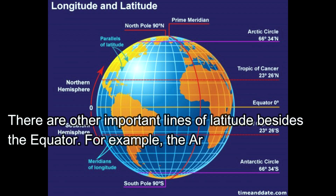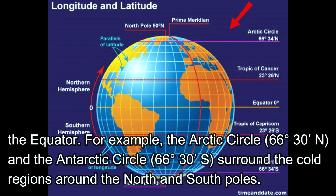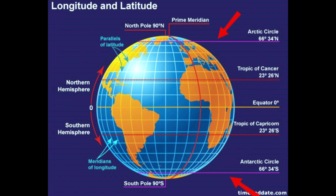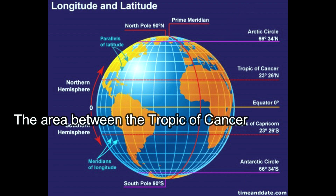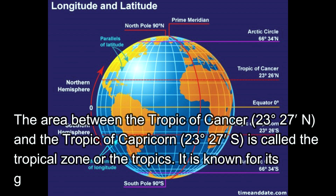There are other important lines of latitude besides the equator. For example, the Arctic Circle is 66 degrees 30 seconds north, and the Antarctic Circle is 66 degrees 30 seconds south — these mark the cold regions around the north and south poles. The area between the Tropic of Cancer at 23 degrees 27 seconds north and the Tropic of Capricorn at 23 degrees 27 seconds south is called the tropical zone, or tropics, known for its hot weather conditions.